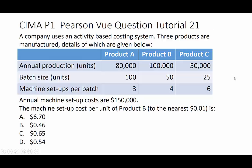Our question says a company uses an activity based costing system and three products are manufactured. We have production volumes per year of 80,000, 100,000, and 50,000 units. The batch sizes tell us how many units are produced per batch, and the number of setups needed are three, four, and six respectively. The total cost of all setups for the whole year is $150,000.